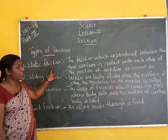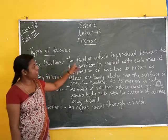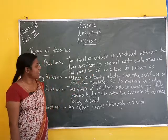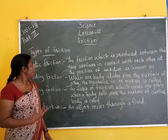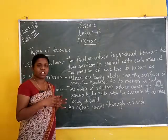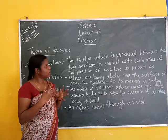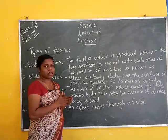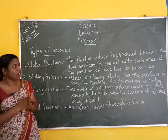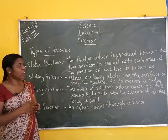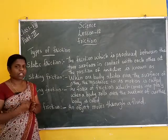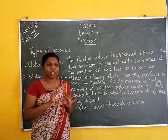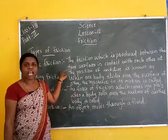First, static friction. The friction which is produced between two surfaces in contact with each other at the position of inactivity is known as static friction. For example, a boy pushes on a heavy box but the box does not move. This represents static friction.